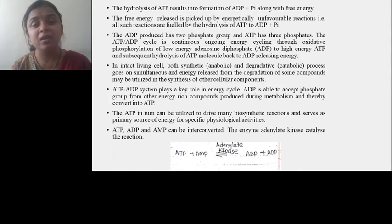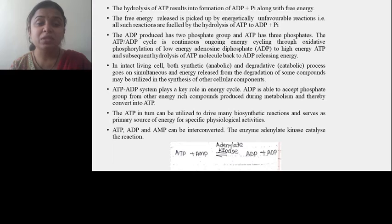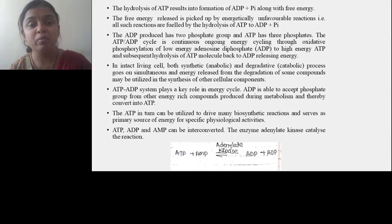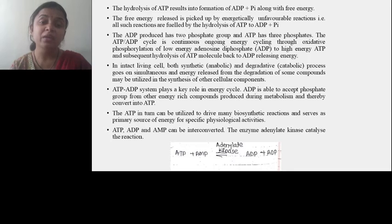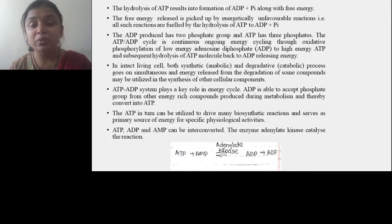In intact living cells, both synthetic and degradative processes go on simultaneously, and energy released from the degradation of some compounds may be utilized in synthetic reactions or other cellular functions. The ATP-ADP system plays a key role in this energy cycle. ADP is able to accept phosphate groups from other energy-rich compounds produced during metabolism, thereby converting to ATP. ATP in turn can be utilized to drive many biosynthetic reactions and serves as a primary source of energy for specific physiological activities.